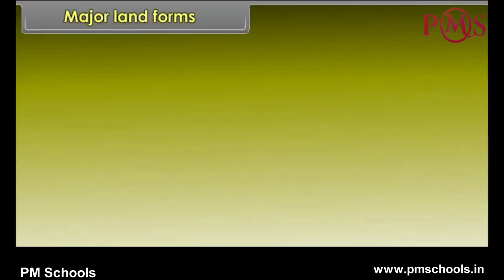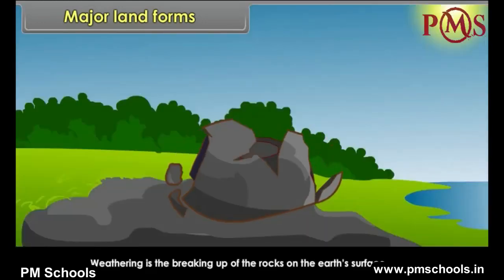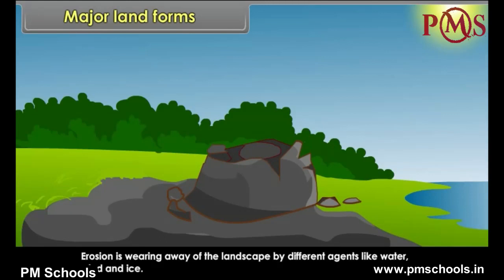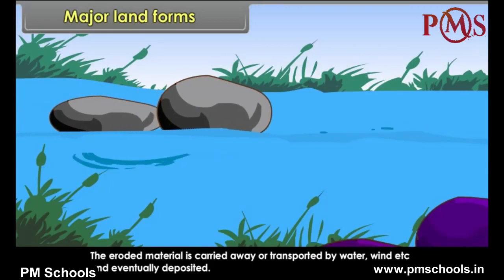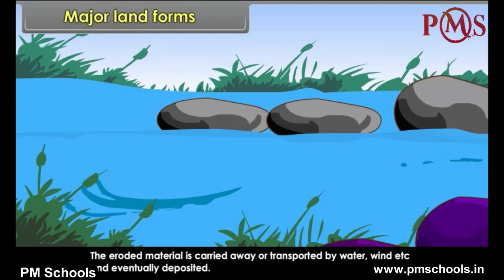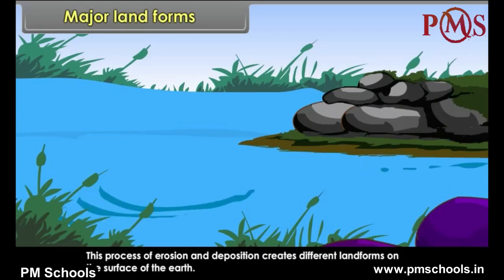Major Landforms. The landscape is being continuously worn away by two processes: weathering and erosion. Weathering is the breaking up of the rocks on the earth's surface. Erosion is the wearing away of the landscape by different agents like water, wind and ice. The eroded material is carried away or transported by water, wind, etc., and eventually deposited. This process of erosion and deposition creates different landforms on the surface of the earth.